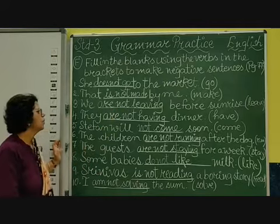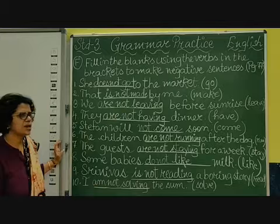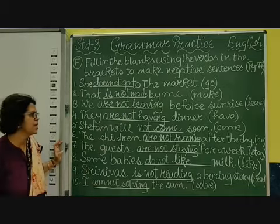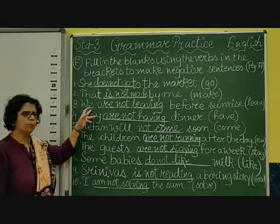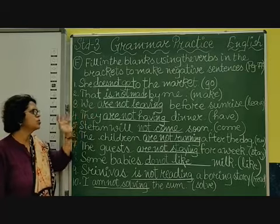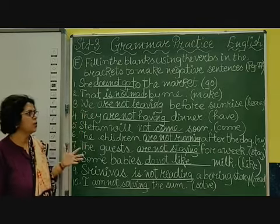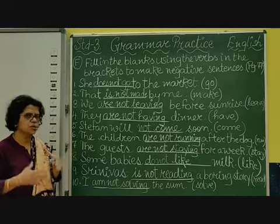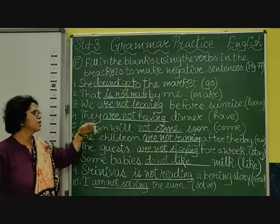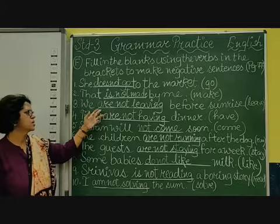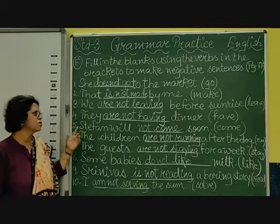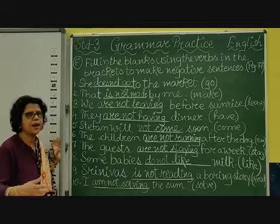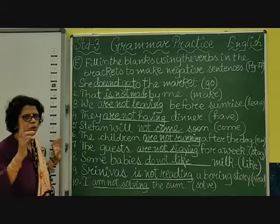Coming to the third one: 'We dash before sunrise,' and the verb given is 'leave.' 'We' is plural, so we will use: 'We are not leaving before sunrise.' This is present continuous tense in negative form. When adding -ing to 'leave,' we omit the E — so it becomes L-E-A-V-I-N-G, leaving.